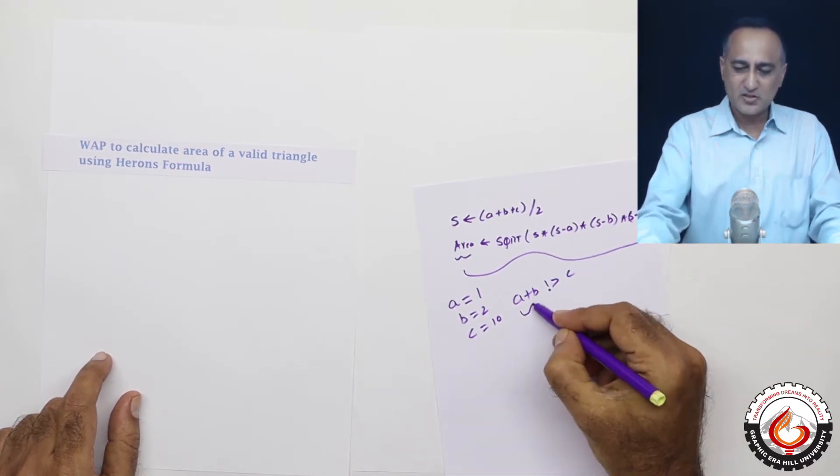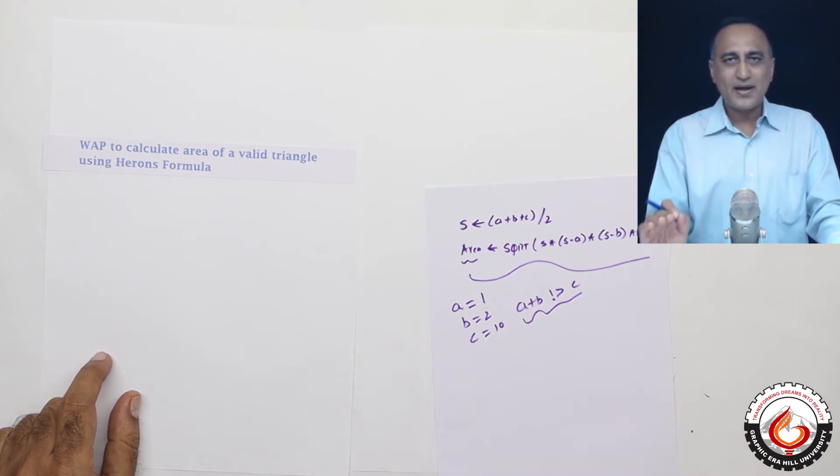So such a triangle is not a valid triangle. For a triangle to be valid, the sum of any two sides must be greater than the third side.